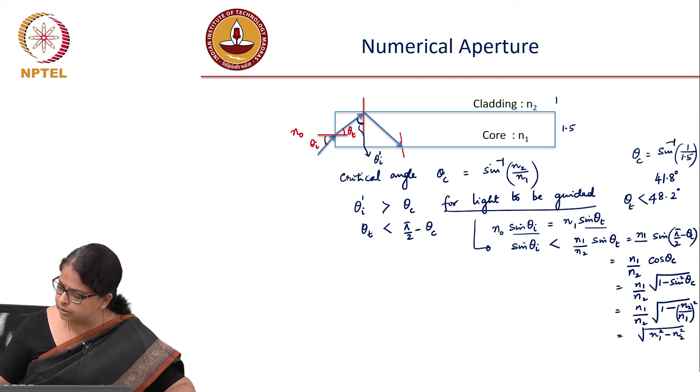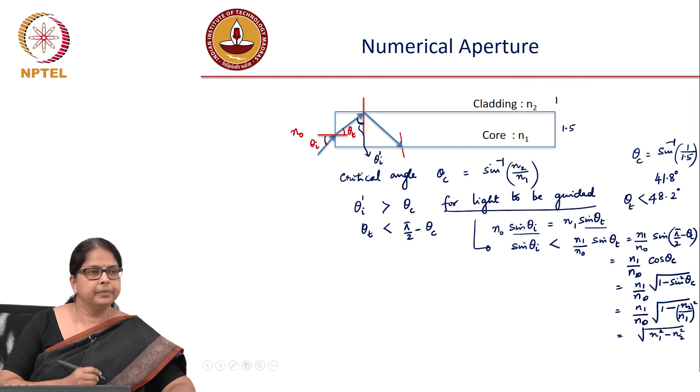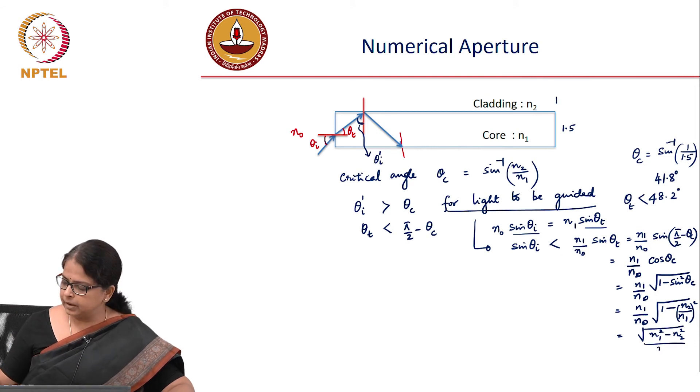Oh sorry, this is not n₂, this should be n₀. So these should all be n₀. These terms are n₀ divided by n₀. If it is air, n₀ becomes 1.